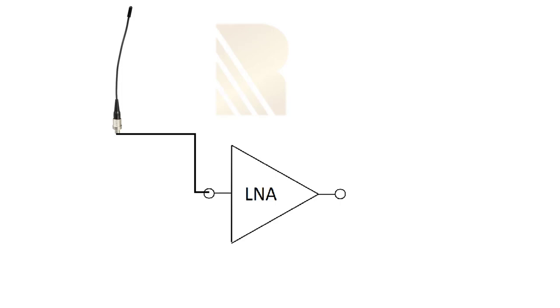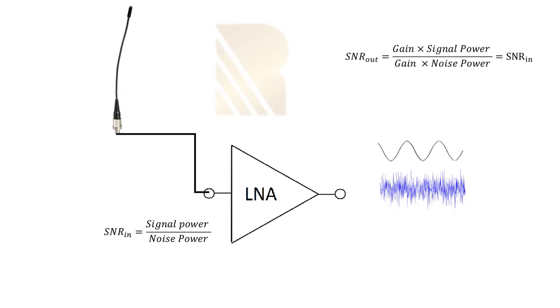We have signal which is received by antenna. LNA is amplifying the signal, so at the output of LNA we will have high amplitude to detect our signal. But we have to remember that we have noise also coming from outside or from the antenna. This amplifier is amplifying the noise at the same time. The signal to noise ratio at the input of this LNA is signal power over noise power. The SNR out is gain times signal power over gain times noise power.